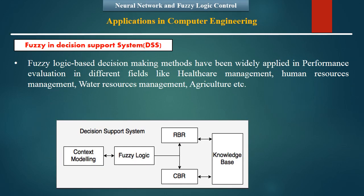As fuzzy logic and neural networks are emerging techniques for AI and ML, they are very important concepts for computer engineers. One major application is the decision support system. In the modern economy, enterprises often have to make decisions in a risk environment, and decision makers need to prevent any loss. Since people can make mistakes leading to big financial losses, there is a need for decision support systems that make the right decisions, and fuzzy logic helps build such computer programs.